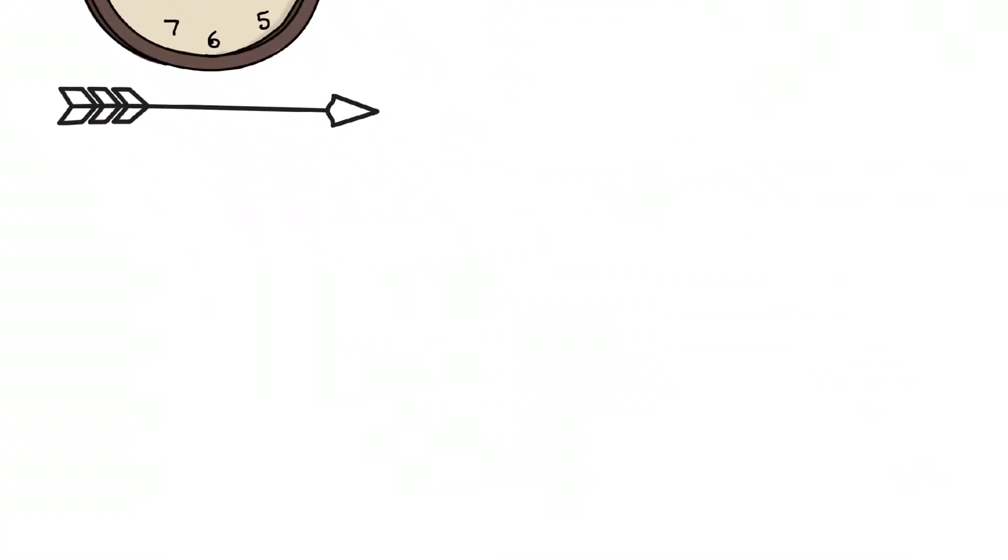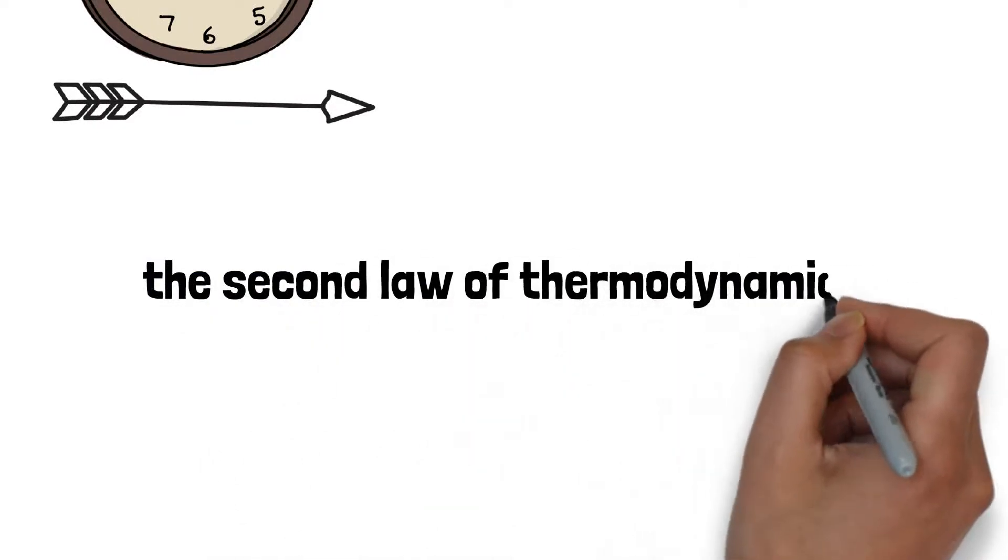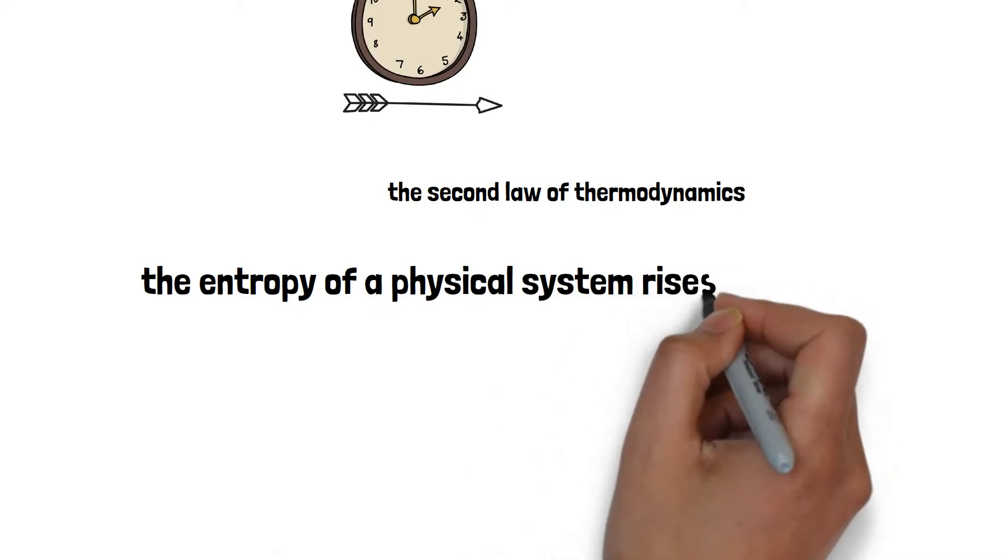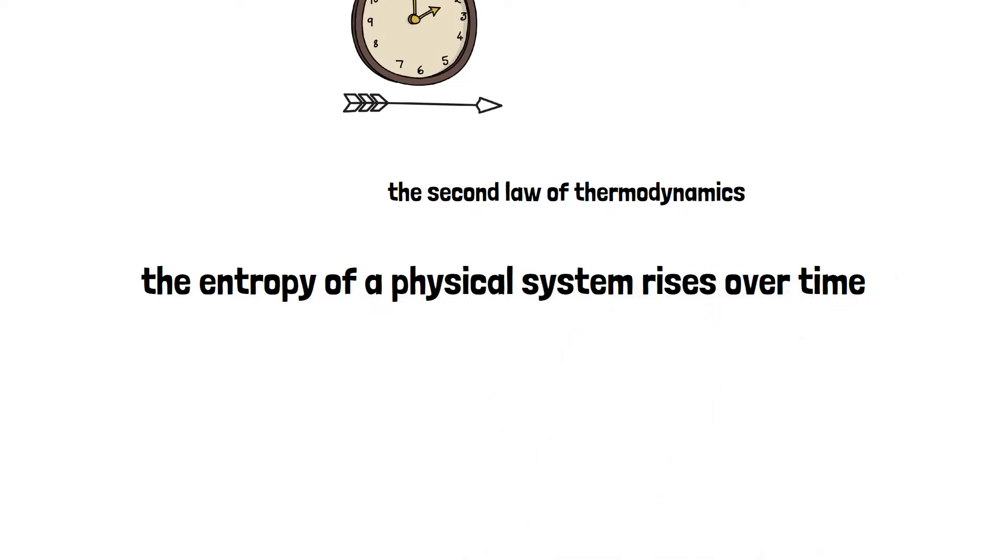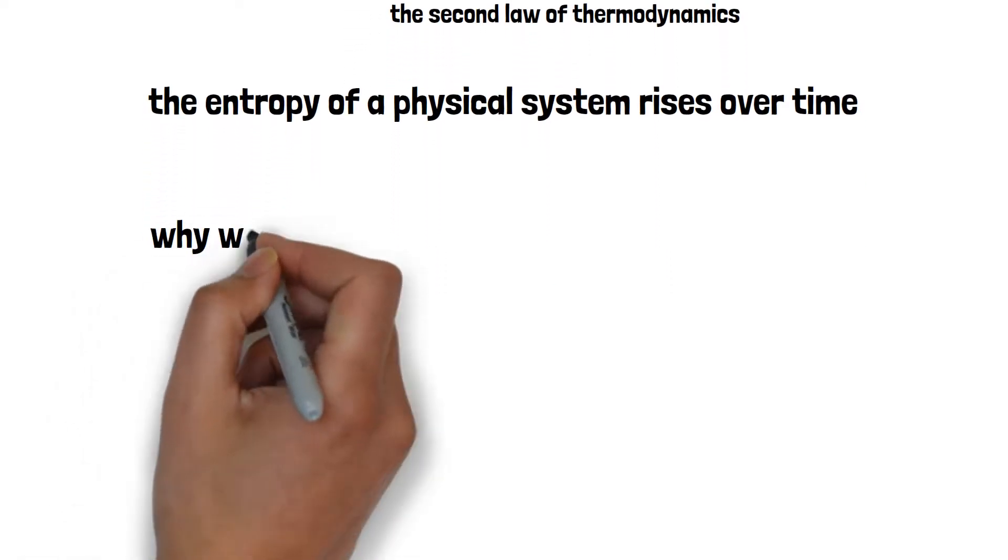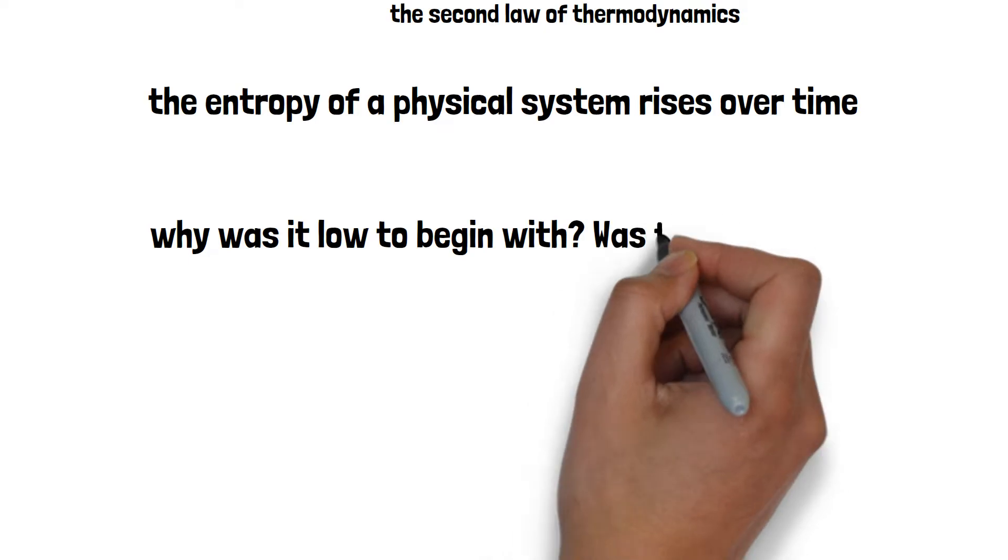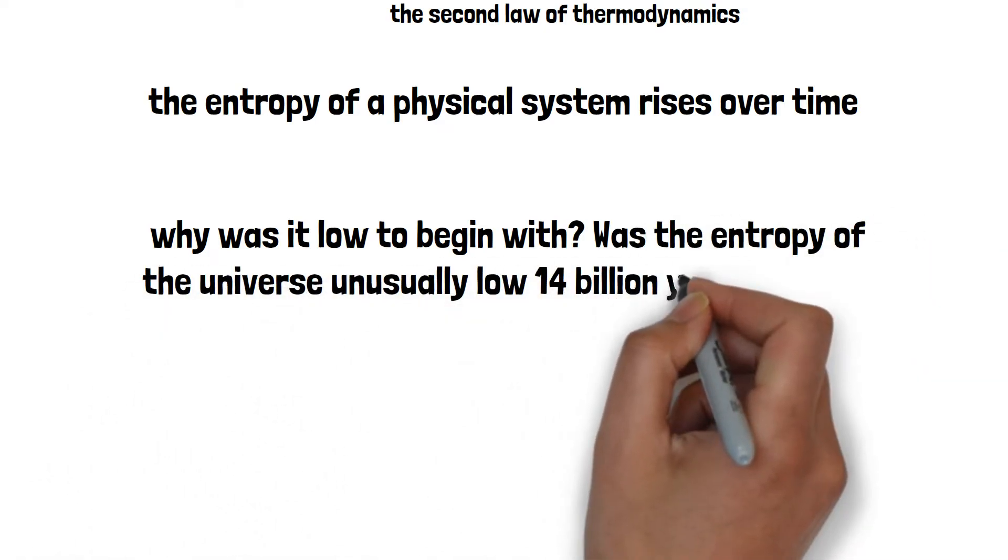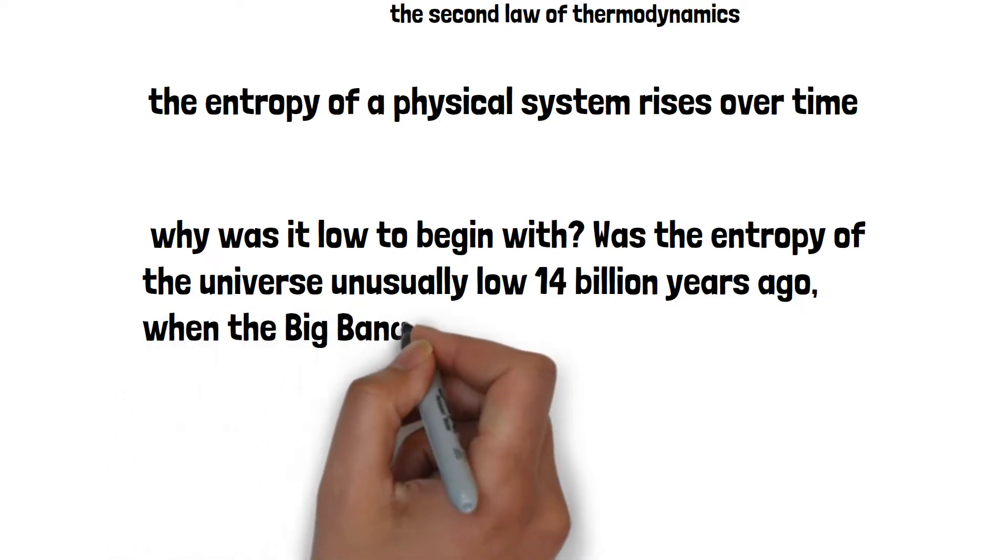Physicists suspect that the second law of thermodynamics provides a clue. It states that the entropy of a physical system rises over time, and physicists think this increase is what gives time its direction. Entropy may be rising now because it was lower earlier, but why was it low to begin with? Was the entropy of the universe unusually low 14 billion years ago, when the Big Bang brought it into existence?